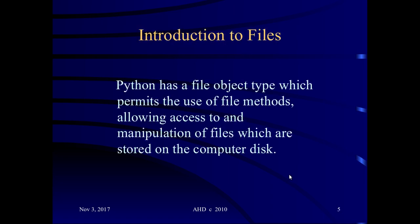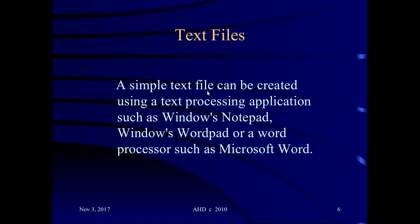So the first part: introduction to files. Python has what's known as a file object type, and that permits the use of file methods. The methods we can use with file objects are, for example, the open method which will open a file, the close method which will close the file, the read method to read a file, and readline which will read a line of a file. We can also write to a file. Now we're going to be using text files, and text files are simple files that can be created. You can use any text editor to create a text file.